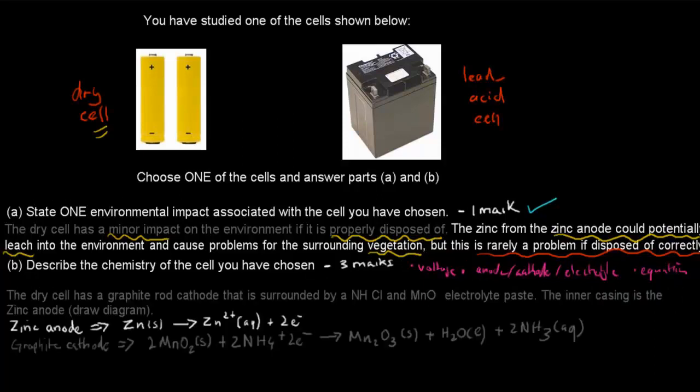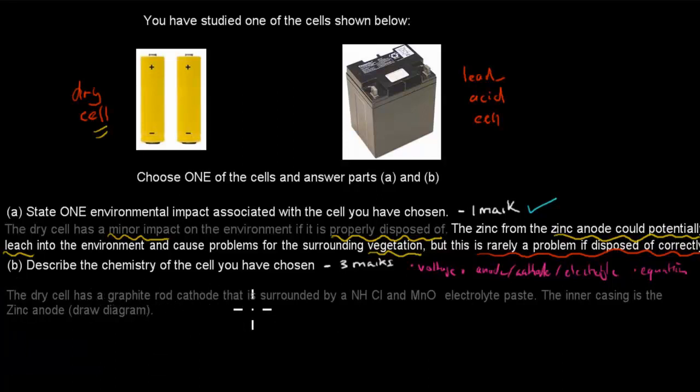So the dry cell has a graphite rod cathode that is surrounded by ammonium chloride and manganese dioxide, MnO2 and NH4Cl. So the dry cell has a graphite rod cathode that is surrounded by ammonium chloride and manganese dioxide paste. The inner casing is the zinc anode. So now we have mentioned the cathode. So the cathode is a graphite rod which is surrounded by manganese. The electrolyte is NH4Cl. And the inner casing is the zinc anode. So now I mentioned the cathode, the zinc anode, and the electrolyte. And what you can do for these kind of equations is always good if you can also draw that diagram of the dry button cell and just label them. So that will definitely get your mark, if not two marks.